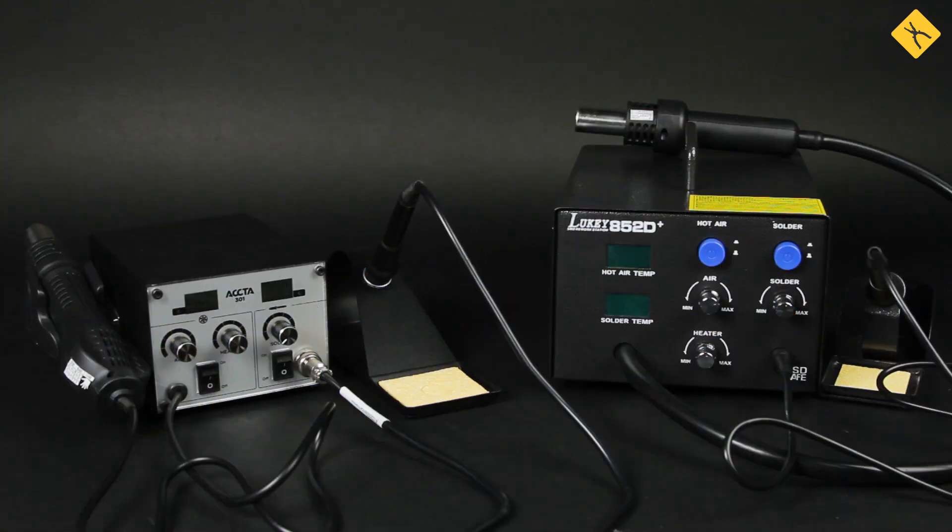A huge advantage of the hot air gun soldering stations with compressor is a smoother airflow, very handy when working with the tiny components on the circuit boards. The compressor is making a bit of noise there. The soldering stations with turbine do not generate such a smooth airflow, but the hot air guns of these stations have much wider use. You can even use them to repair the car bumpers.